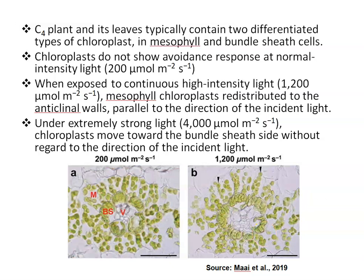Under extremely strong light — 4000 micromole per second per square meter — chloroplasts move toward the bundle sheath side without regard to the direction of the incident light.